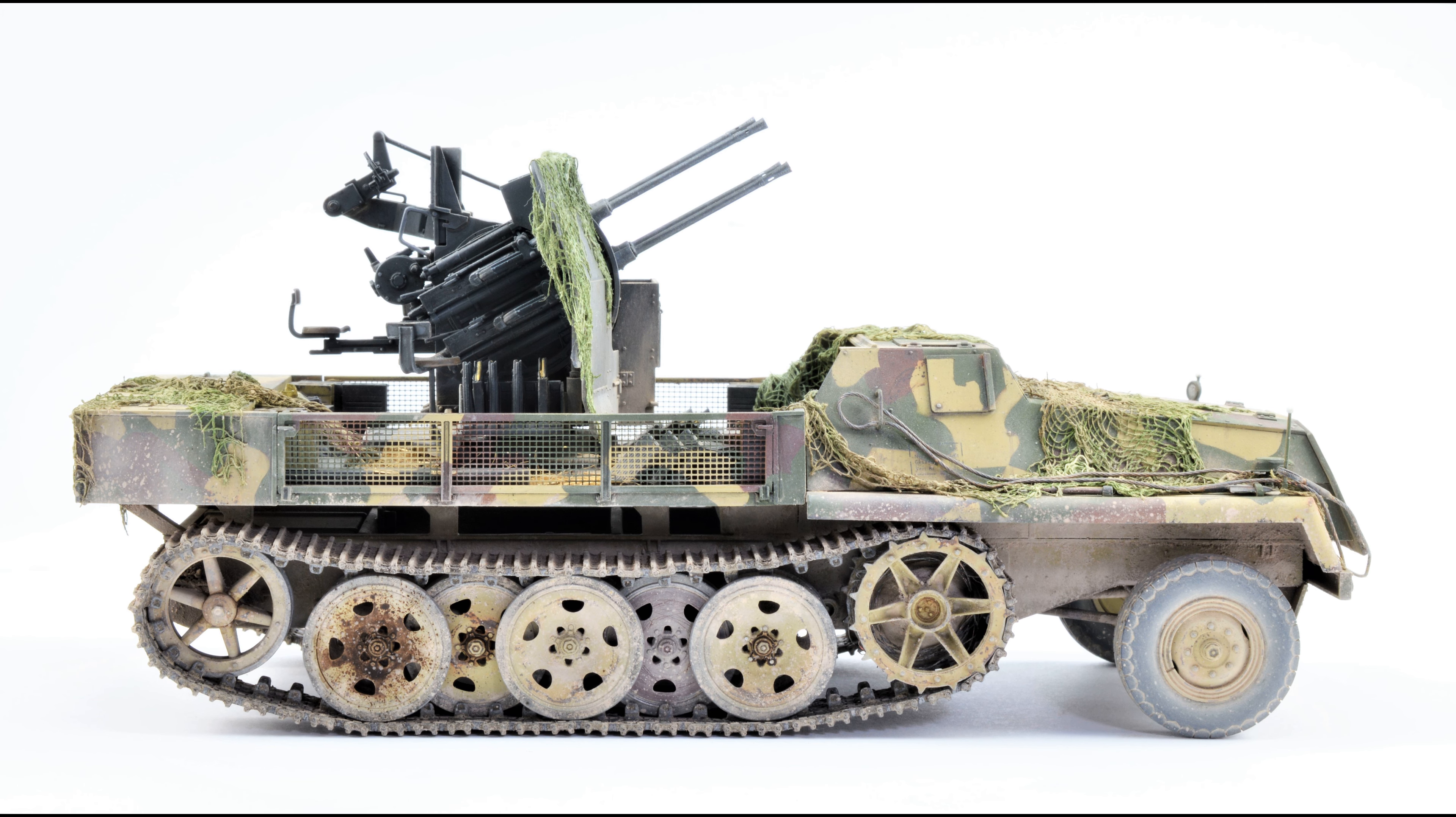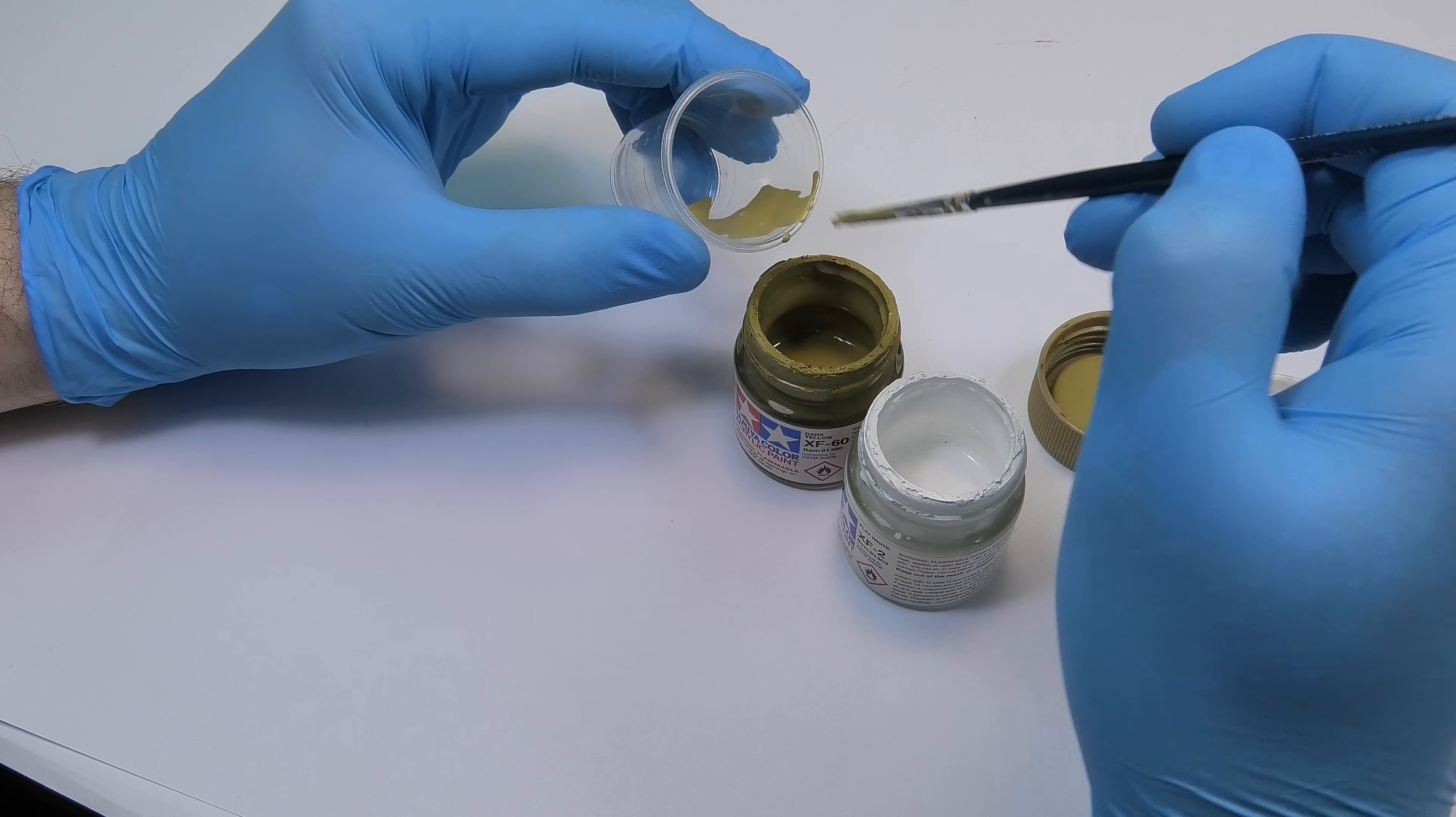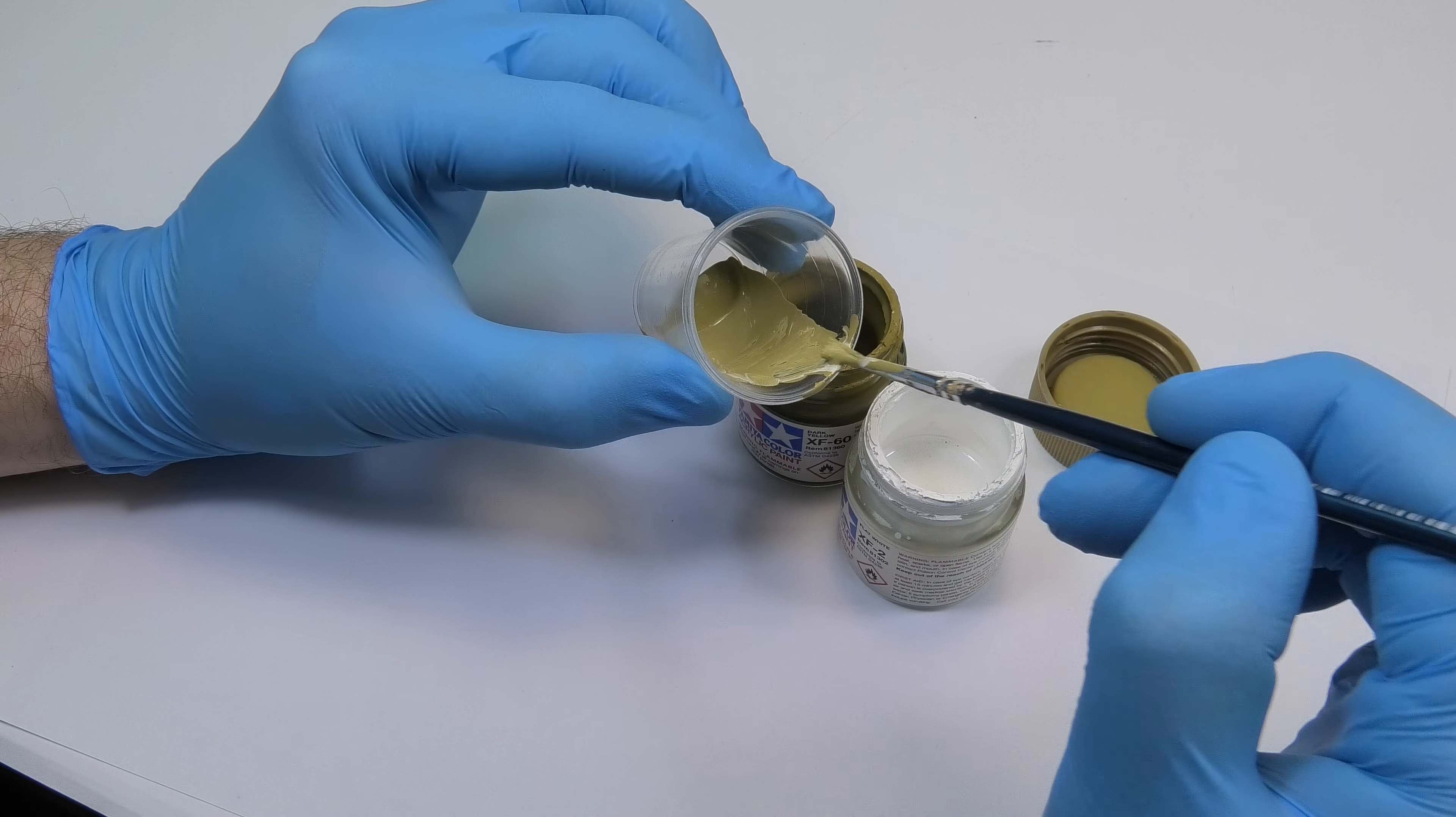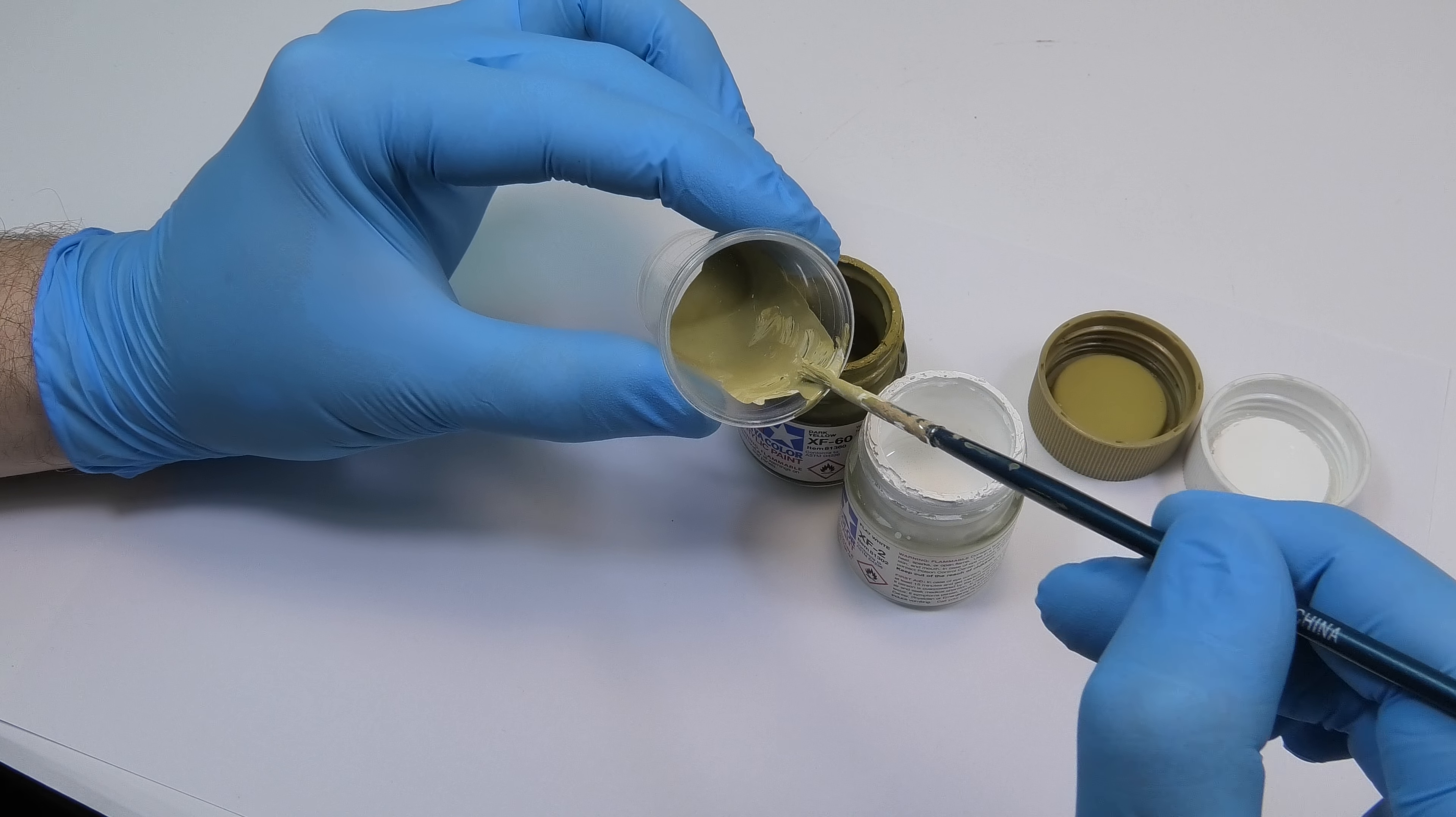We start with painting the base color, which in this case will be dark yellow but lightened with a few drops of white. Why do we brighten? There are several reasons. First and foremost, I have always liked the lighter shade on models, including this type of camo, and now was an opportunity to apply that.